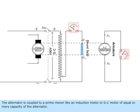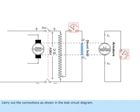The alternator is coupled to a prime mover like an induction motor or DC motor of equal or more capacity of the alternator. Carry out the connections as shown in the test circuit diagram.